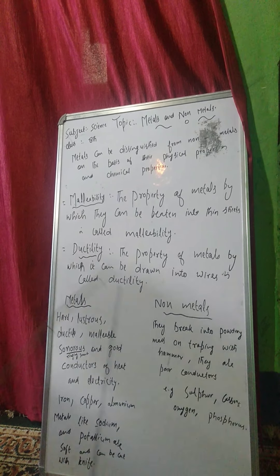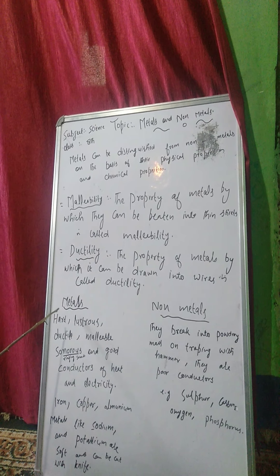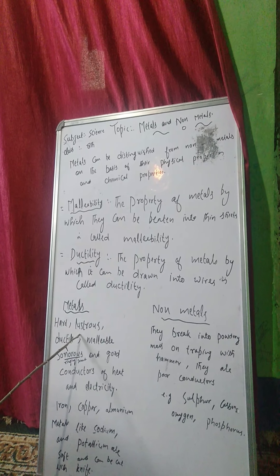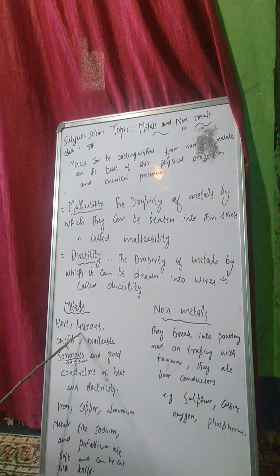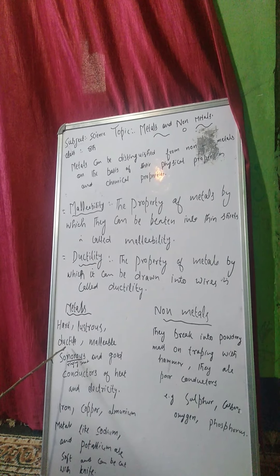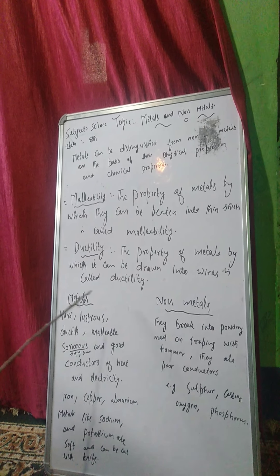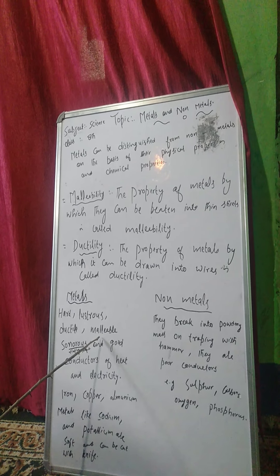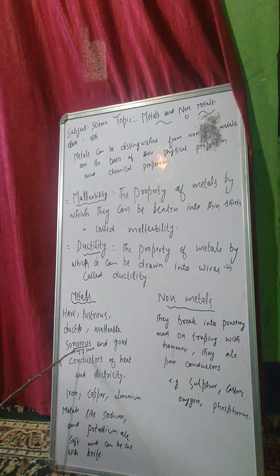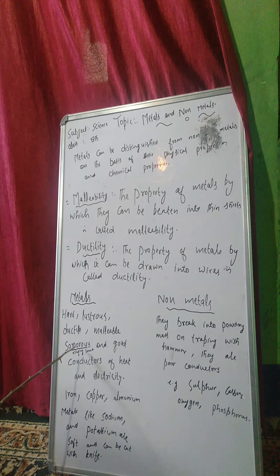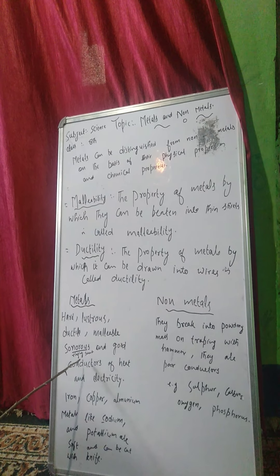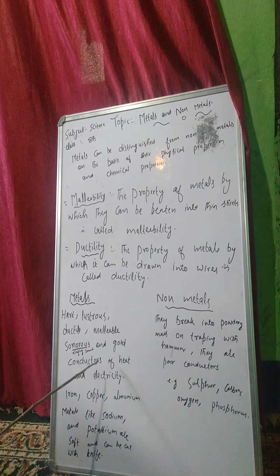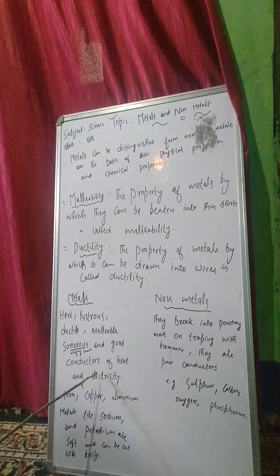Ab hum dekhinge physical properties of metals and non-metals. First of all, we will see the physical properties of metals. Metals hard hota hai, sakat hota hai, lustrous hota hai — unmeh chamak hoti hai, unmeh shine hoti hai. They are ductile — unko hum wires mein convert kar sakte hai. They are malleable — unko hum beat karke thin sheets mein convert kar sakte hai. Metals are sonorous — agar hum unko beat karengi to unse ringing sound aayegi. And metals are good conductors of heat and electricity.